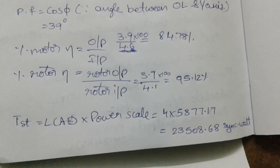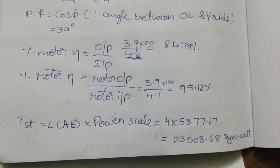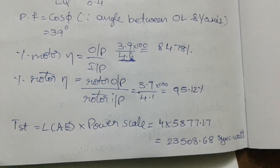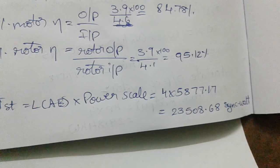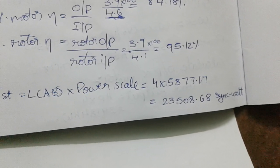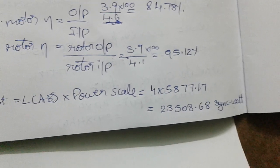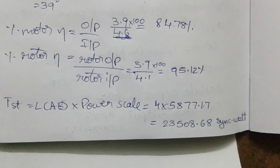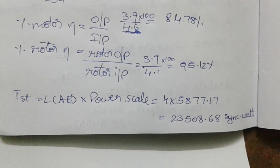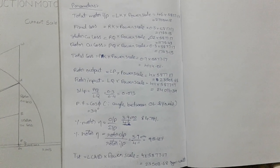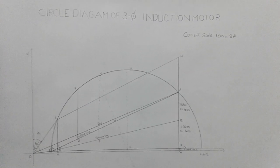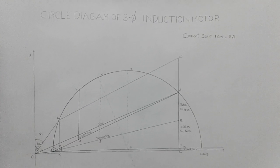The last parameter is starting torque, which equals AE multiplied by the power scale. From the diagram, point A and point E are identified. The starting torque is obtained as 23508.68 synchronous watts. These are all the parameters for the circle diagram of the three-phase induction motor, constructed using the given data.